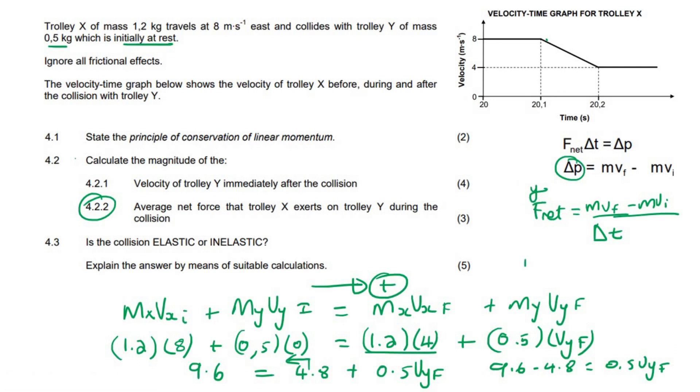So F net is what we are trying to calculate. The mass of trolley Y is 0.5. I'm going to run out of space here. So it's 0.5. What is the final velocity of trolley Y? It is, we got it as 9.6. Yes, 9.6. And we got a positive answer, so that was to the right. I should choose a direction as positive. 9.6 minus the original velocity. The original mass is 0.5, and the original velocity was 0.